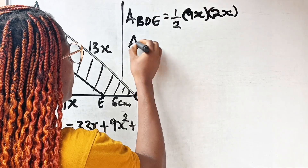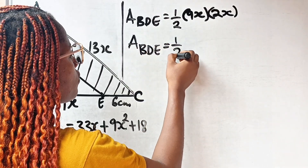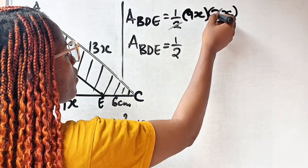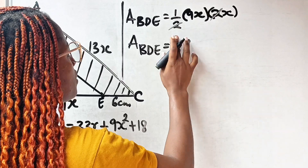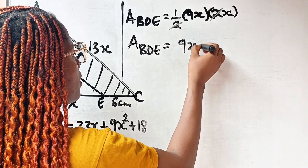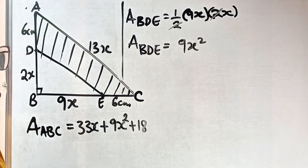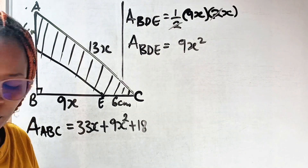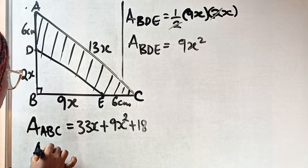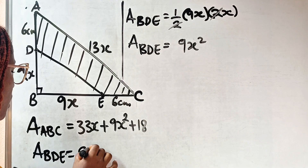So we have the area of BGE equal to half multiplied by 9 times 2. We divide out the 2, giving 9x squared. So we have 9x squared as the area of the unshaded portion of the diagram. Area of BDE is equal to 9x squared.